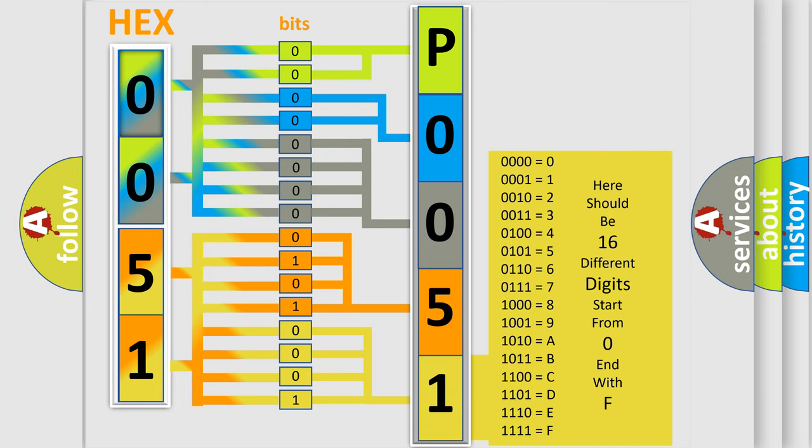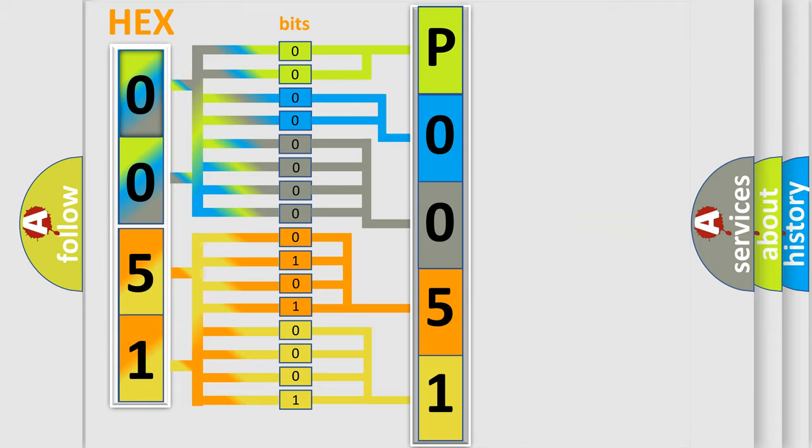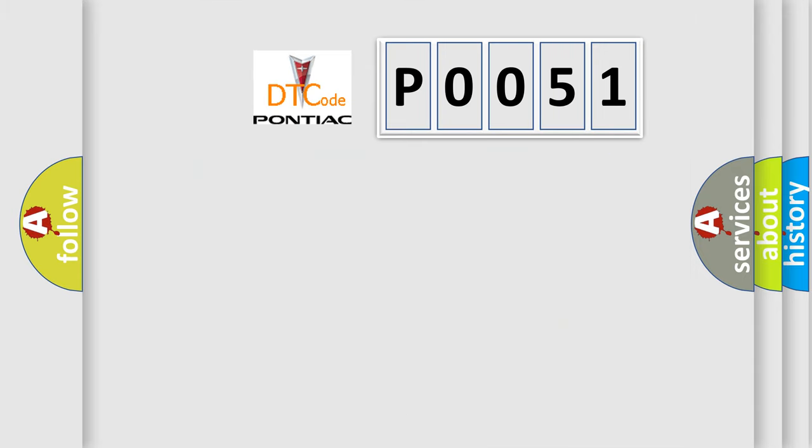We now know in what way the diagnostic tool translates the received information into a more comprehensible format. The number itself does not make sense to us if we cannot assign information about what it actually expresses. So, what does the Diagnostic Trouble Code P0051 interpret specifically for Pontiac car manufacturers?